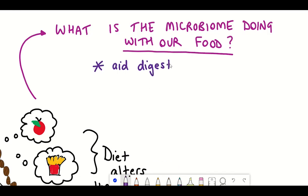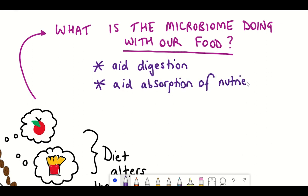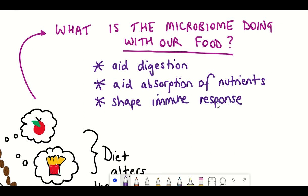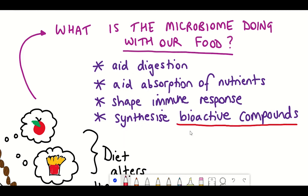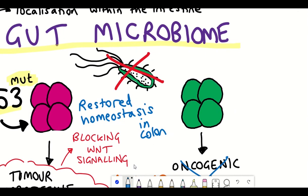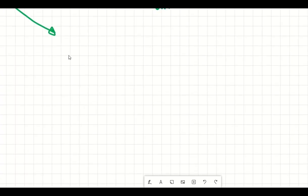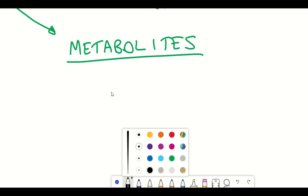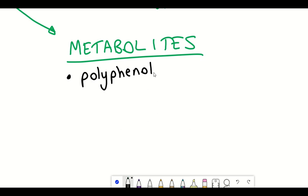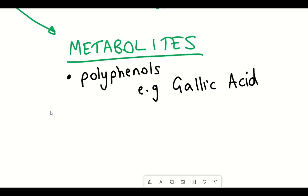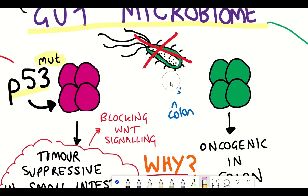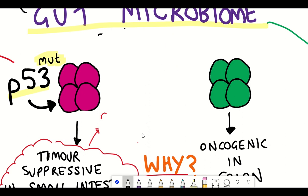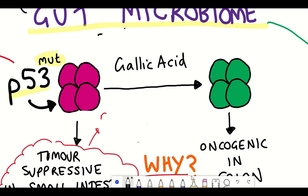The gut microbiome is arguably playing really important roles within our body, so learning about its removal having a beneficial impact on tumorigenesis is quite concerning. What part of the gut microbiome was actually causing this effect? The gut microbiome are known to produce a variety of different metabolites, and by analysing these the authors found that polyphenols — and in particular gallic acid — seem to be responsible for converting the tumour suppressive mutant p53 into the more oncogenic p53 seen in the colon.